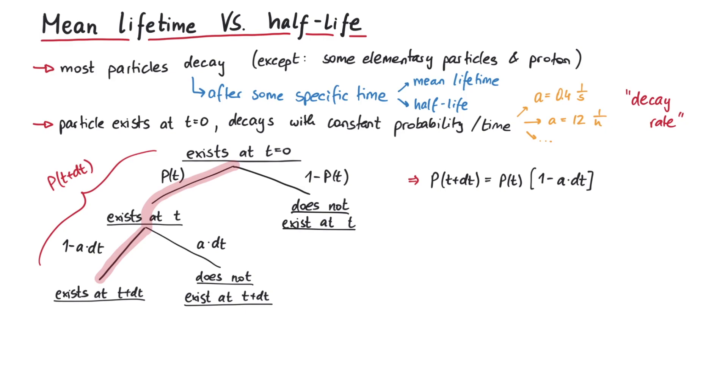So p of t plus dt is given by p of t times 1 minus a dt. If we rearrange this equation and consider dt to be very small, we can write this as a differential equation which is solved by an exponential function. Also the integration constant p0 is equal to 1.